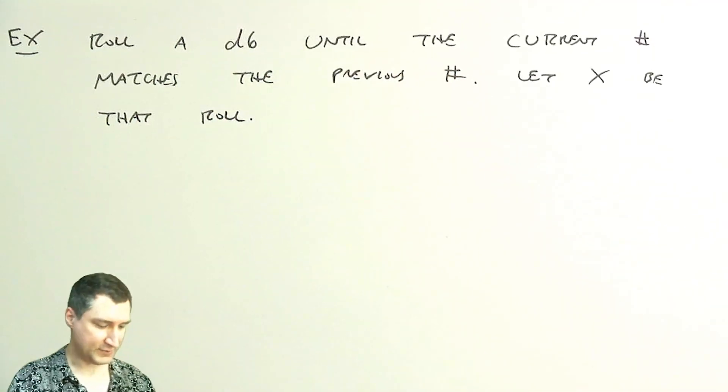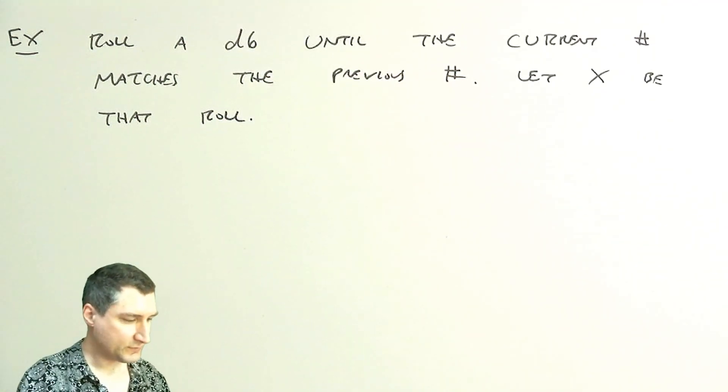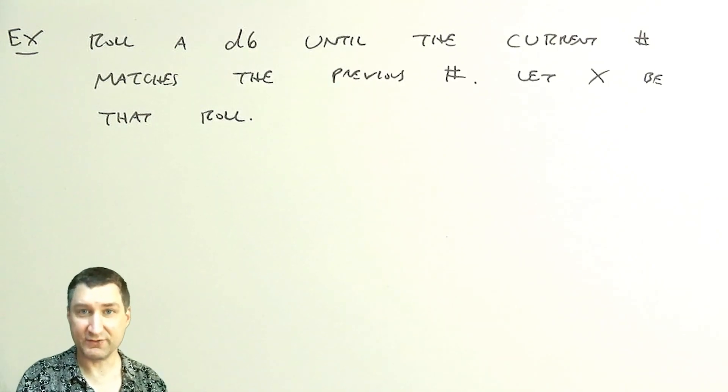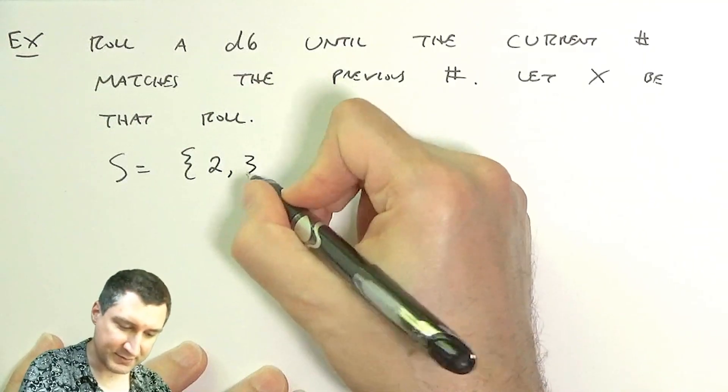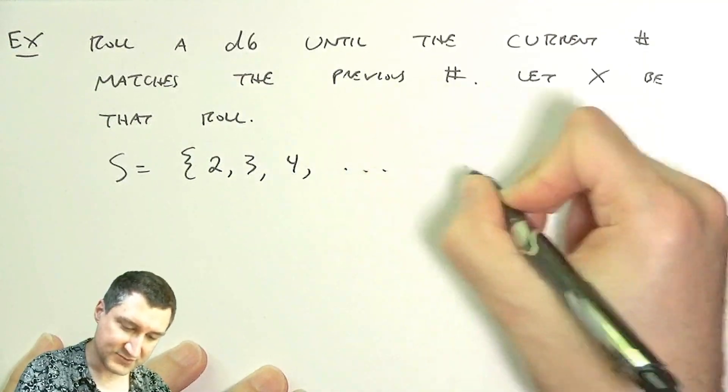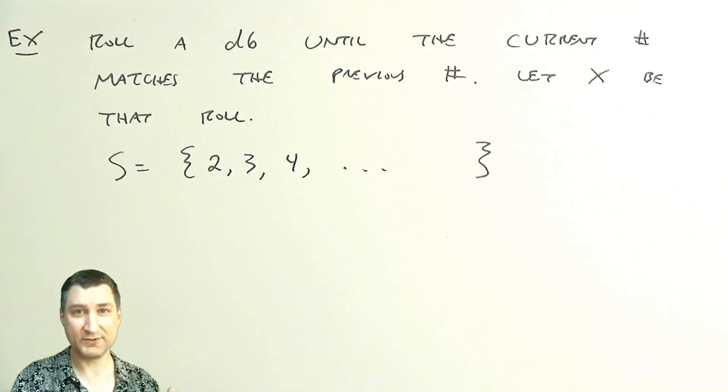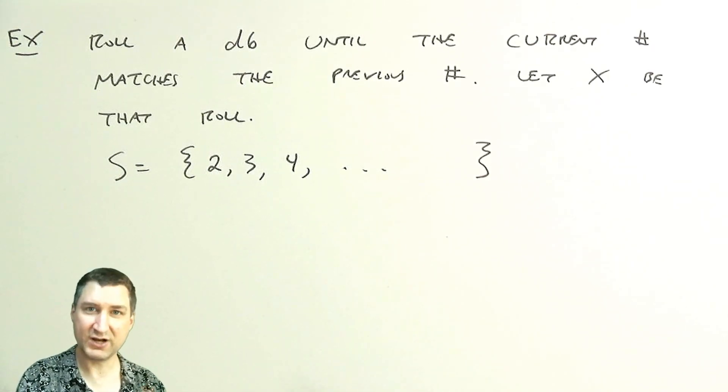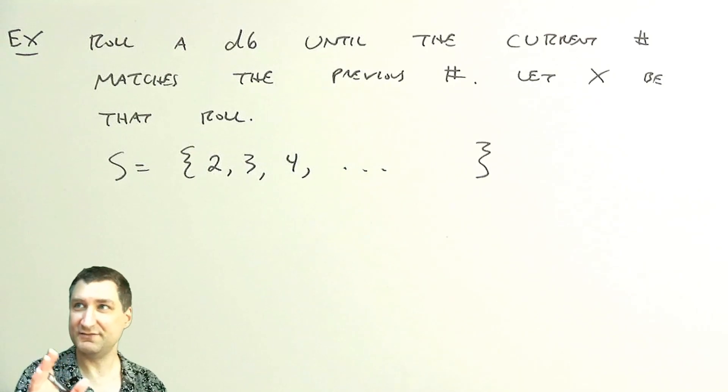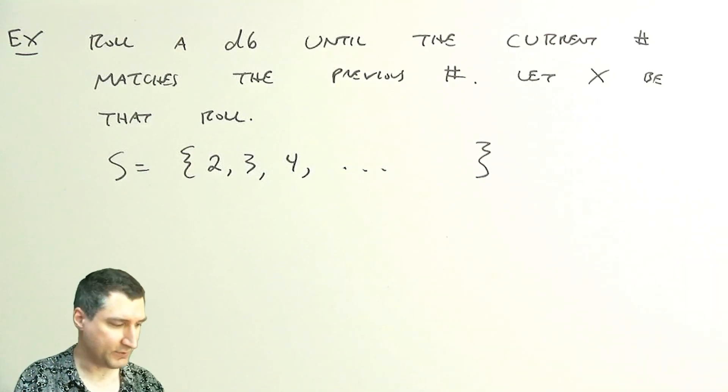The sample space here is infinite. It could take me two rolls for that to happen, three rolls, four rolls, or I might be rolling 10,000 times and never see it happen. But we can still compute the probability that this value X is a certain number.